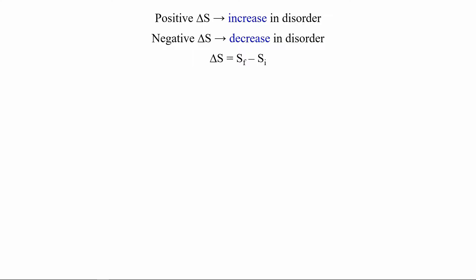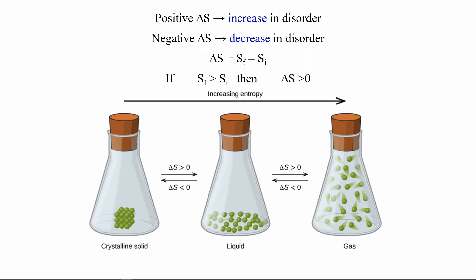For a specific system, we can calculate the change of entropy by looking at the entropy of the final state and comparing it to the entropy of the initial state. If the final state is more disordered than the initial state, then our change in entropy is greater than zero. A solid is going to be very ordered in its crystal structure. As we melt that solid to a liquid, there's going to be more disorder. As we change to a gas, we'll take up an even larger volume, with more randomness. So going from solid to liquid to gas is going to be an increase in entropy.